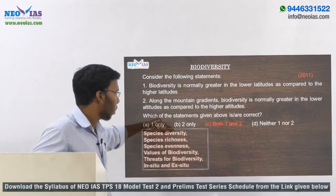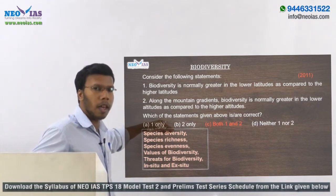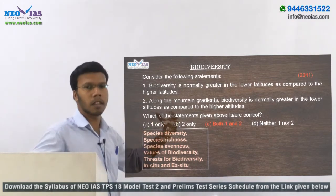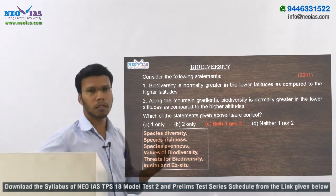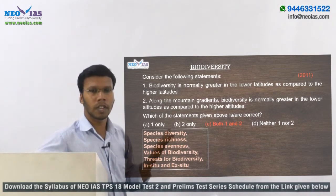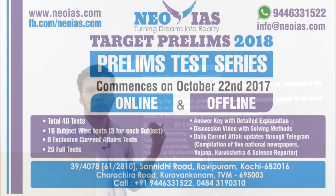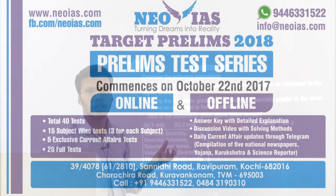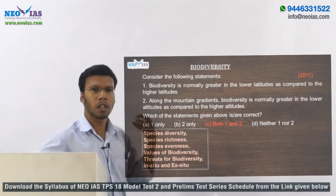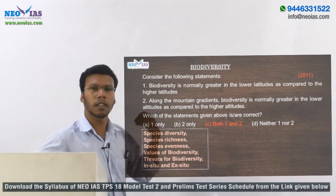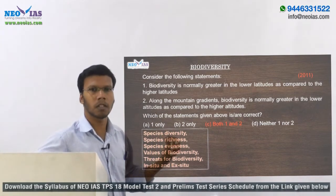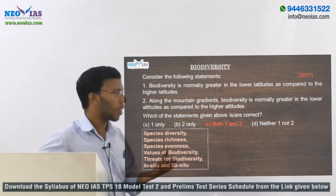Species diversity and its relation with population and genetic diversity are important. There was a recent genetic study on tiger populations in India which found that genetic diversity of tigers is decreasing due to the non-connectivity of tiger populations — they are fragmented. For genetic diversity, populations need to be connected with each other, so we can expect a question related to that.